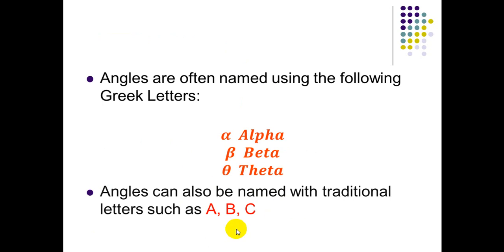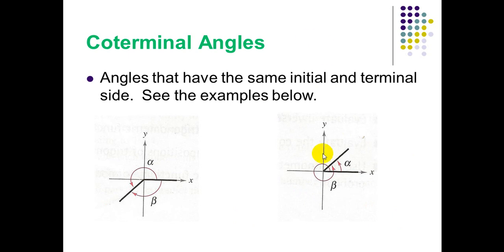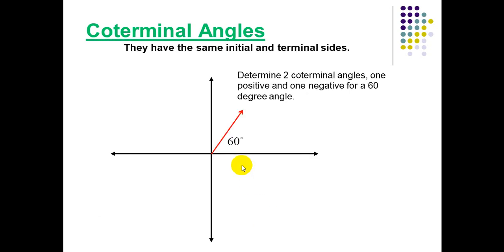What is the meaning of coterminal angles? Coterminal angles are angles that have the same initial side and terminal side. Look at this figure: alpha and beta both have the same initial and terminal side. The second figure also shows alpha and beta having the same initial and terminal side.